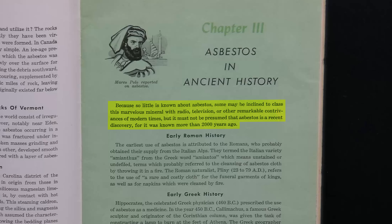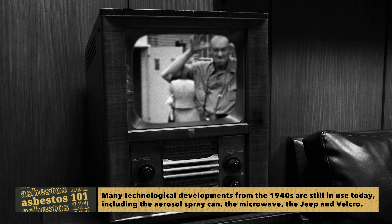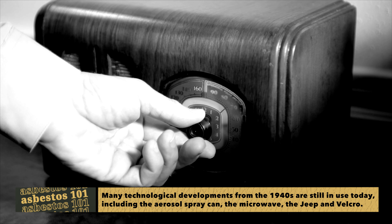The book states: because so little is known about asbestos, some may be inclined to class this marvelous mineral with radio, television, or other remarkable contrivances of modern times. But it must not be presumed that asbestos is a recent discovery, for it was known more than 2,000 years ago. Remember, go back to the 1940s when this was written — modern age is starting to really be underway. They've got television, radio, airplanes, jet planes, and they're working on space projects. Asbestos was a key part of all of this. In the 40s, asbestos was like a high-tech industry.